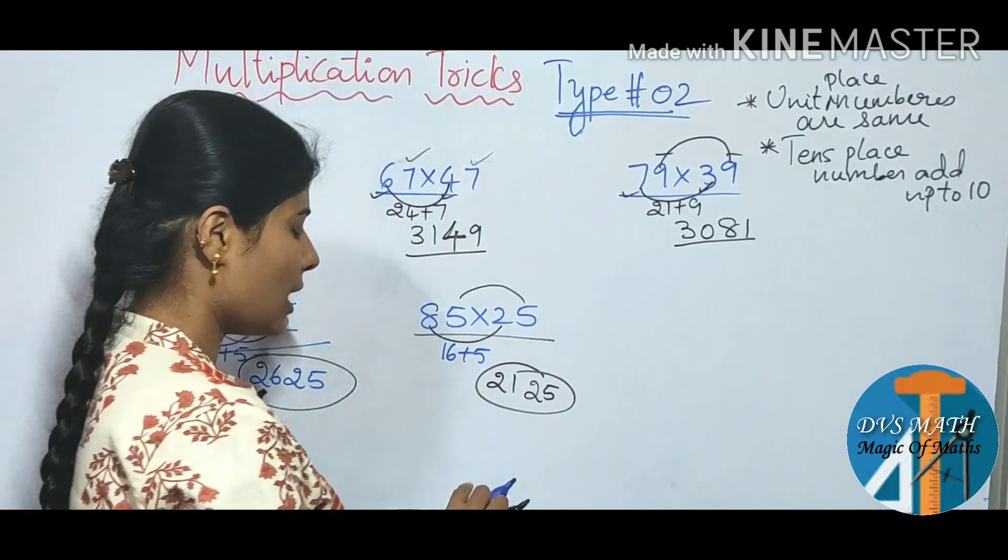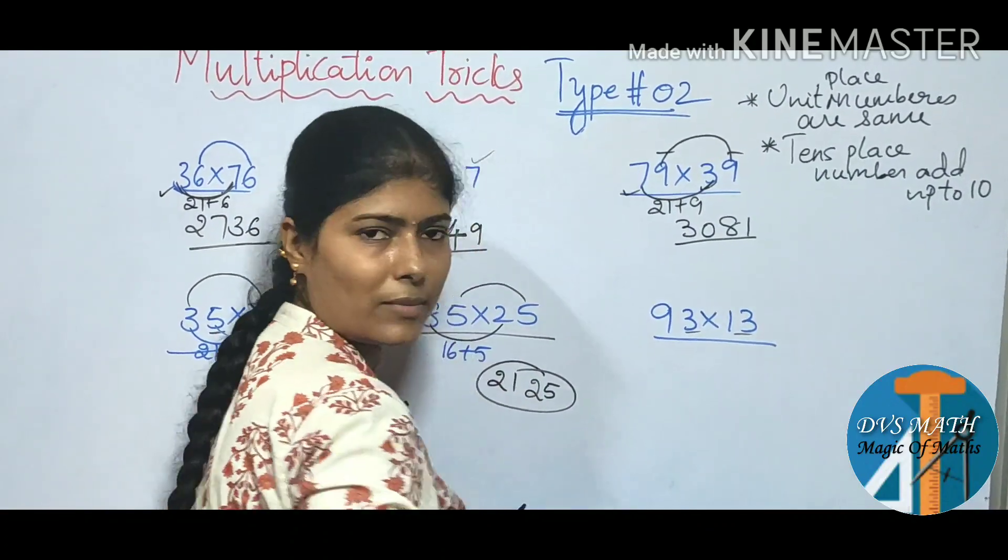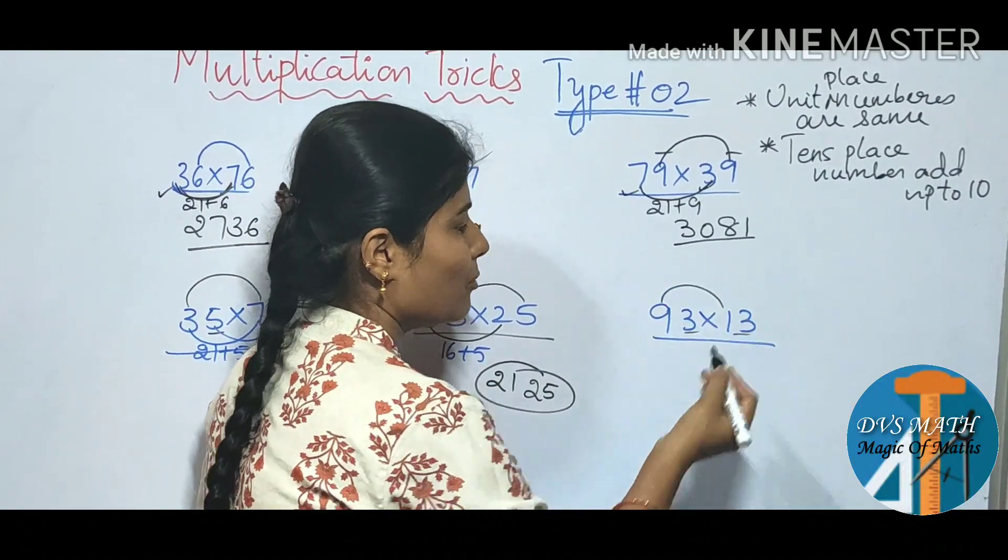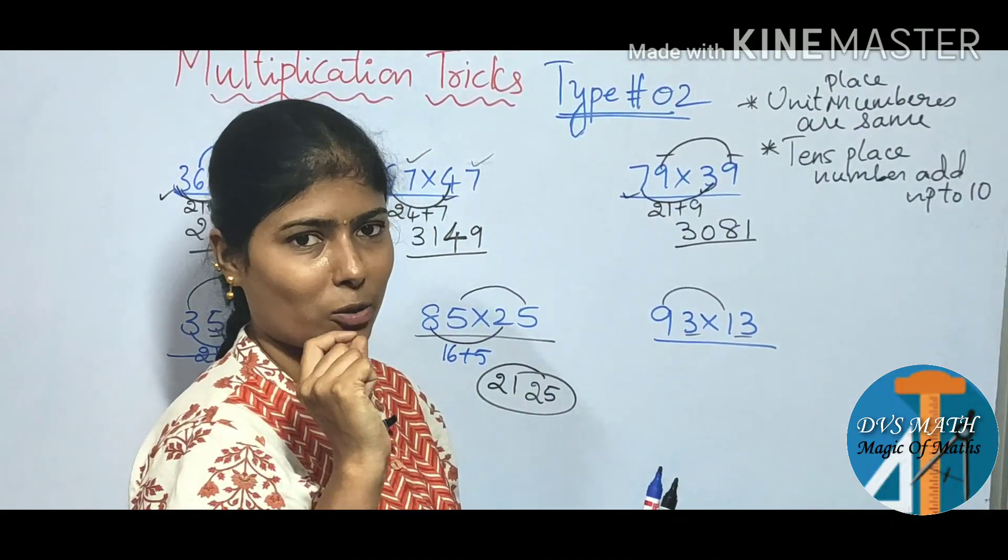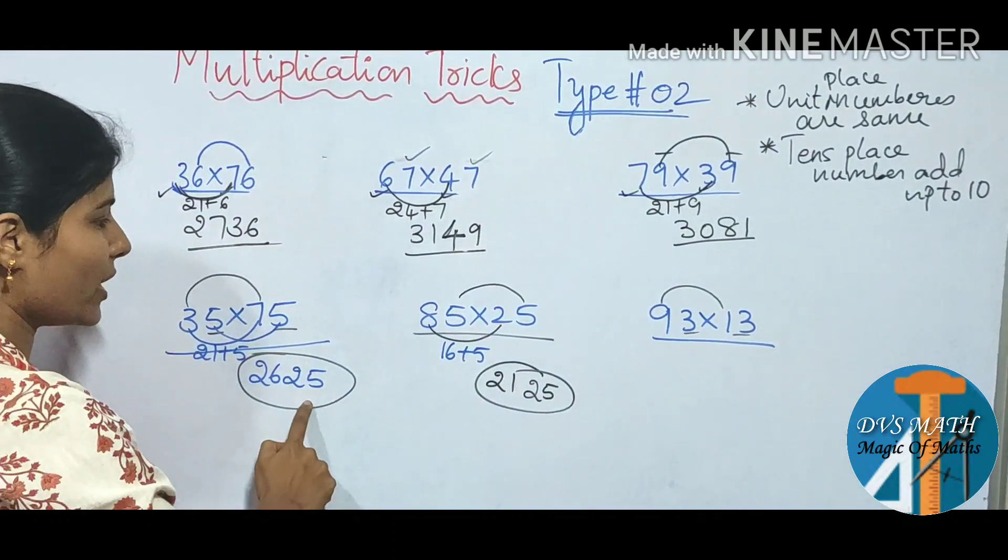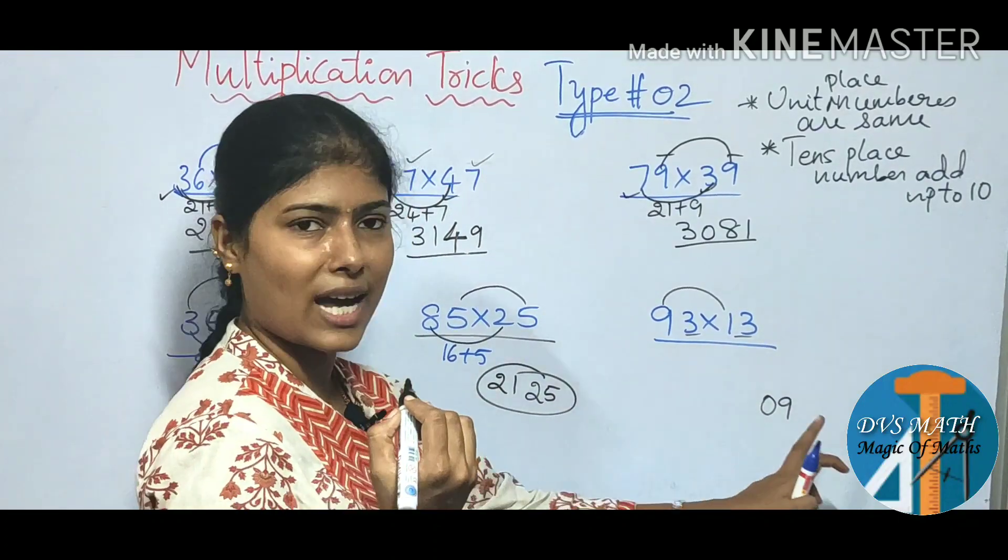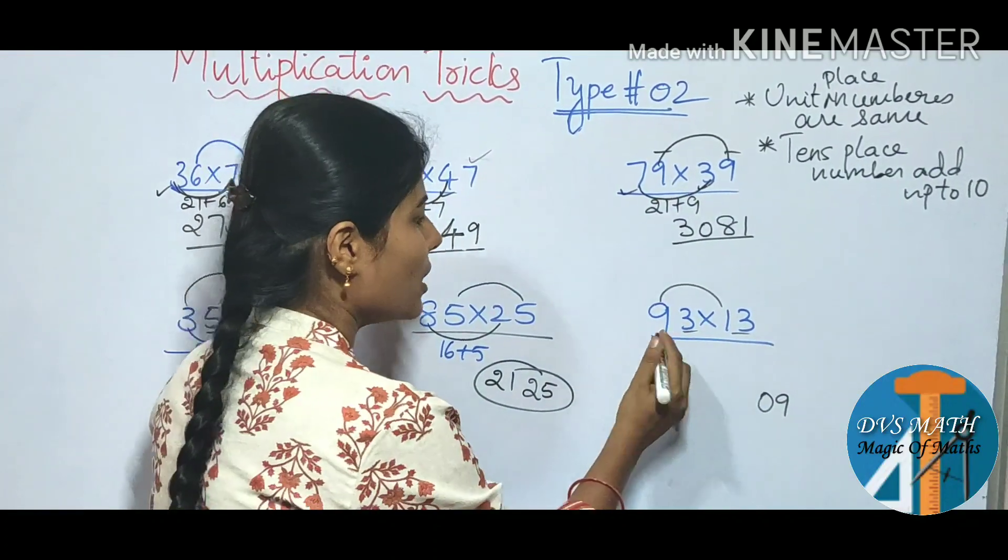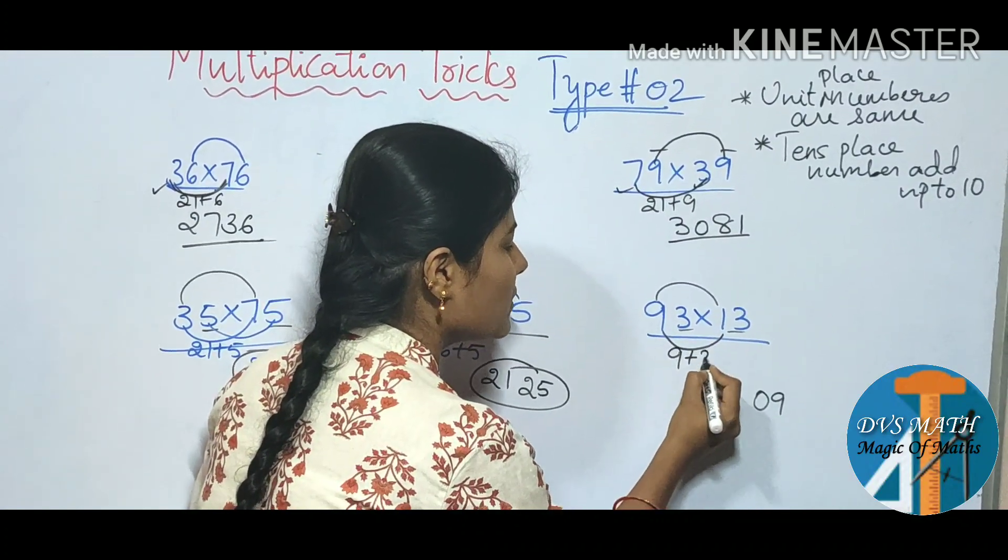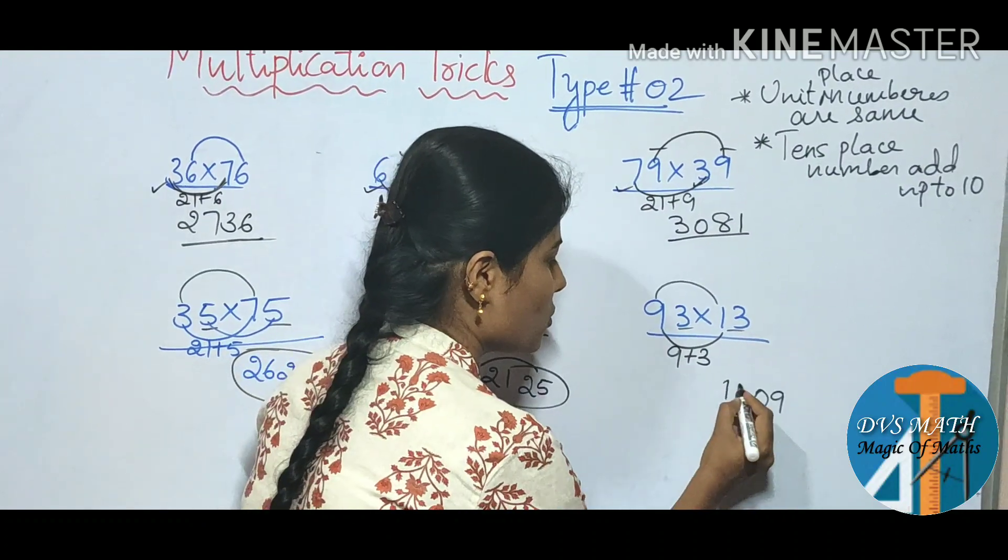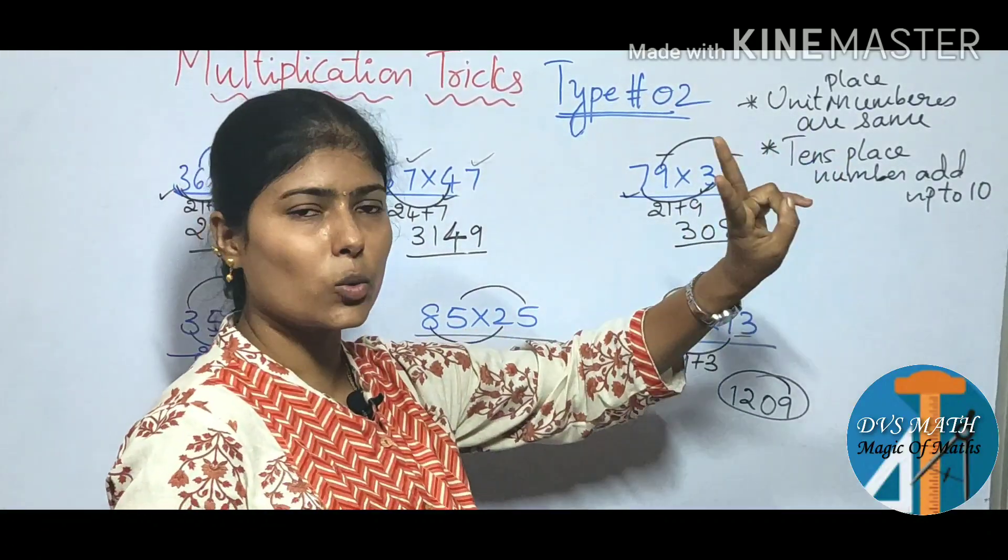The last example, 93 into 13. So unit place same, 10 place allowed. 10 multiply. 3 3s, 3 3, 9. So single digit, 81, 49, 36, 25, 25. Single digit, because 0 9, 0 7, 0 6, 0 8. Next, unit place multiply, 10th place 9 1s are 9. 9 plus same number is 3. So 9 plus 3, 12. So 1209.